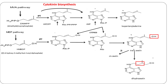Another cytokinin, zeatin, is synthesized in two ways: either by hydroxylation of the isopentyl group on adenine ribonucleotides by cytochrome P450 monooxygenases, or by directly adding the hydroxylated side chain by IPT. Zeatin mainly exists as a trans isomer, but in some plants the cis isomer is formed by zeatin isomerase. Zeatin also exists in the reduced form as dihydrozeatin.